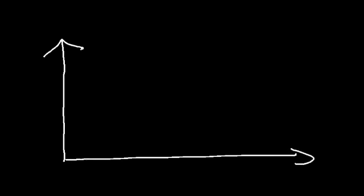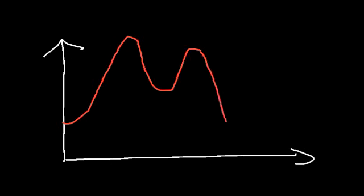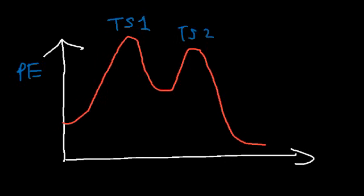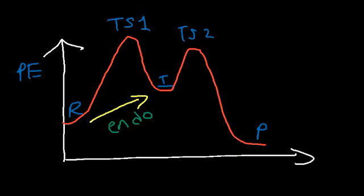Consider this particular potential energy diagram. This diagram has multiple steps. Here we have the first transition state, this is the second one. Here we have the reactants, the products, and the intermediate. In the first step, it involves the reactants changing into intermediates, and notice that it's going up the potential energy diagram, so the first step is an endothermic step — delta H is positive.